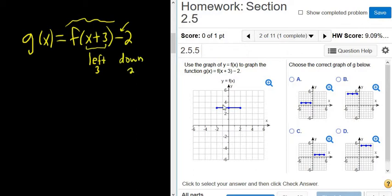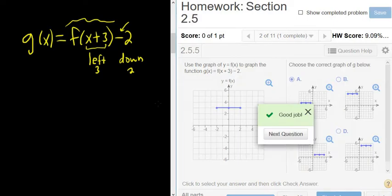So we're taking this picture here, and we're going left 3 and down 2. So it looks like the correct choice would be choice A. Let's try it. And yep, that's correct.